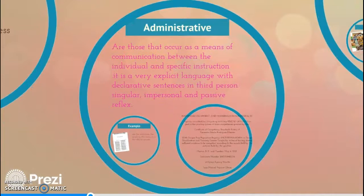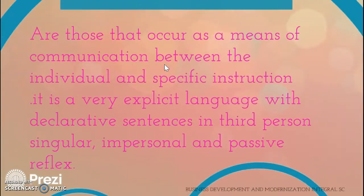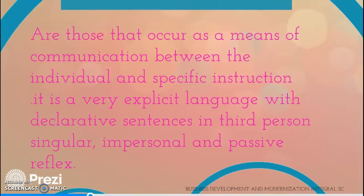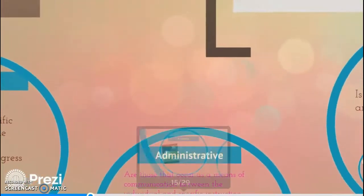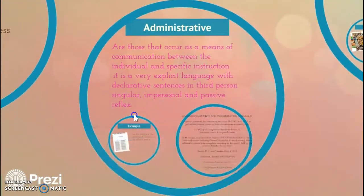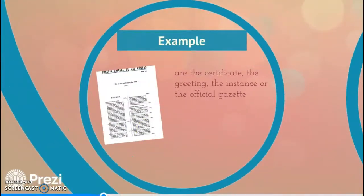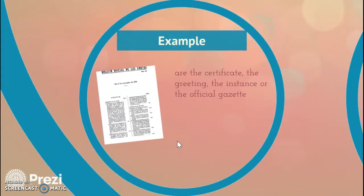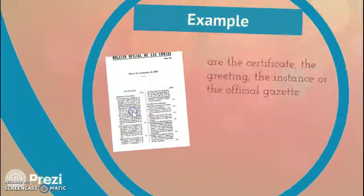Administrative texts are those that occur as a means of communication between the individual and specific institutions. It is a very explicit language with declarative sentences in third person, singular, impersonal, and passive reflex. Here is an example of a certificate, the greeting, the instance of the official gazette.